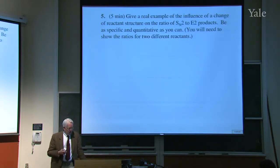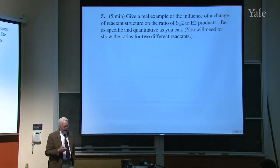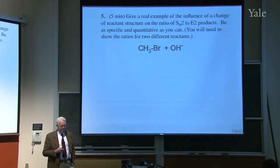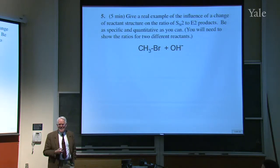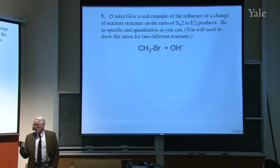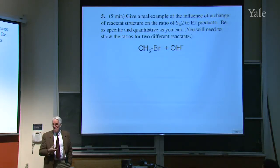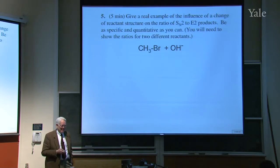This was a question I asked on an exam once. Give an example of the influence of a change in reactant structure on the ratio of SN2 to E2 products. Be as specific and quantitative as you can. The simplest answer is methyl bromide. How about the amount of SN2 and E2 in that case? Anybody venture a guess? This is a trick question. There's no hydrogen on the adjacent carbon, so obviously that's going to be all SN2.